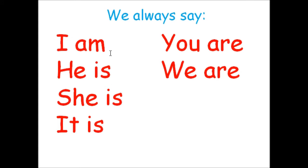We use 'I am' when we are talking about one person — yourself. We always say 'he is' when we are talking about a boy or a man — again, one person. We always say 'she is' when we are talking about a girl or a woman, and it's just one person. And we use 'it is' when we are talking about one animal or one thing.